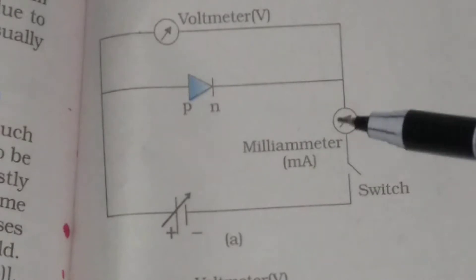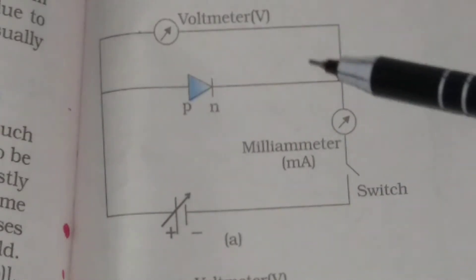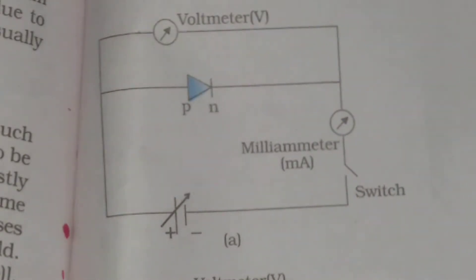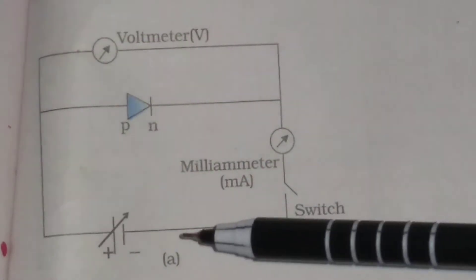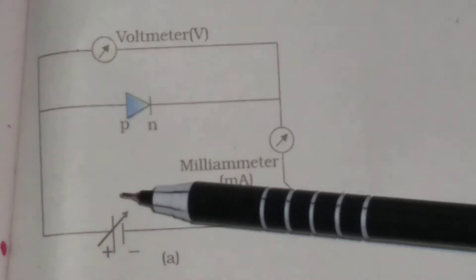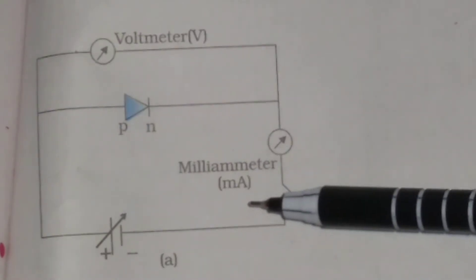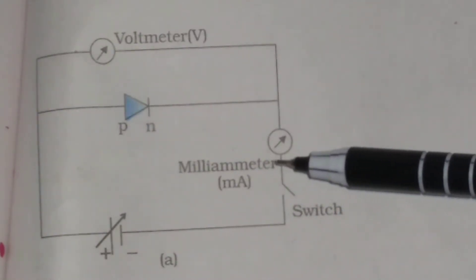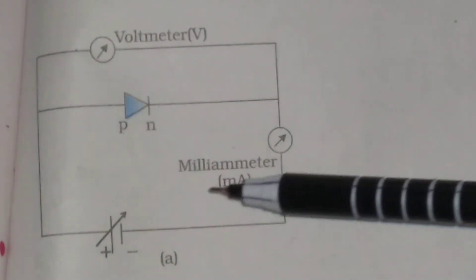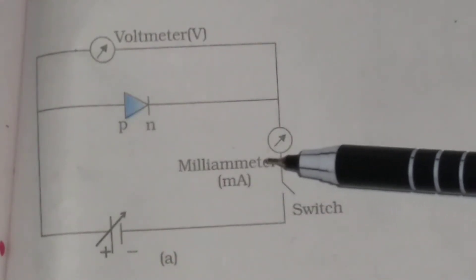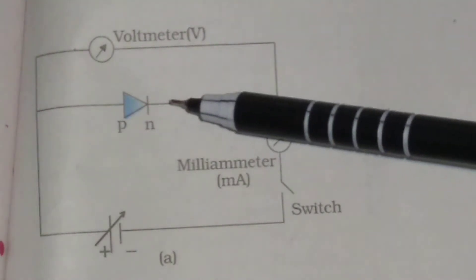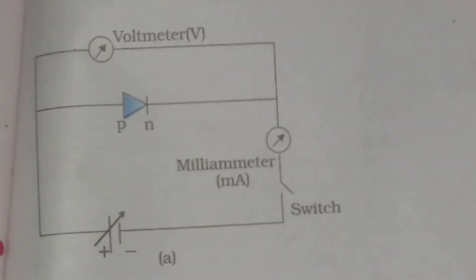A milliammeter is connected in series with the diode and the voltmeter is connected in parallel to the diode. We increase the potential from the source so that the current also increases, and the variation of potential with current is plotted in a graph. This graph is called the VI characteristics of the semiconductor diode when the diode is forward biased.